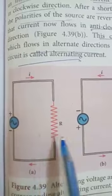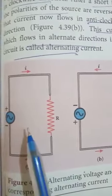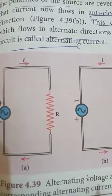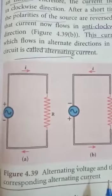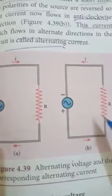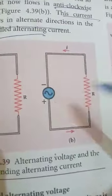This alternating source is connected to a resistor of resistance R. The upper terminal of the source is positive and the lower terminal is negative. Current is flowing in the clockwise direction. After some time, the polarity of the source is reversed, and so the current will flow in the anticlockwise direction.